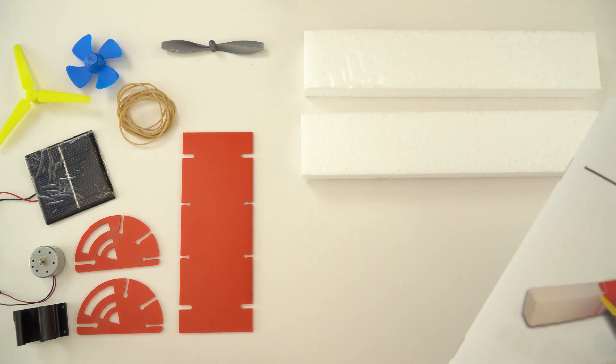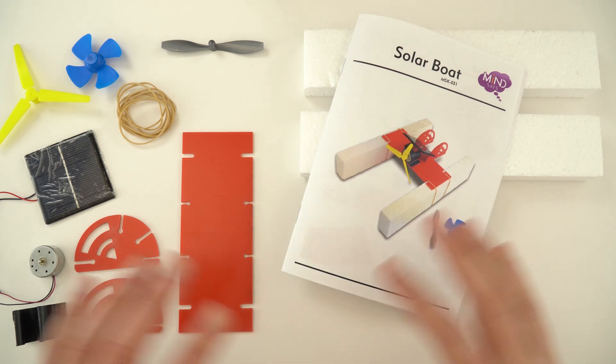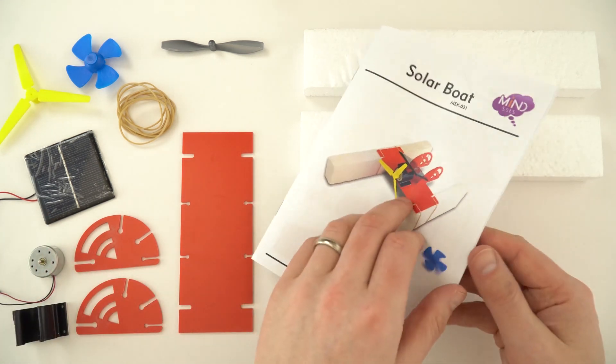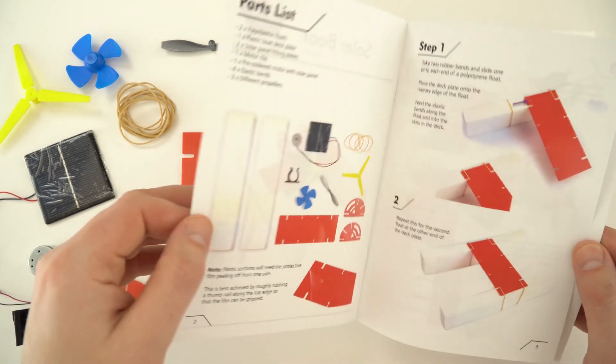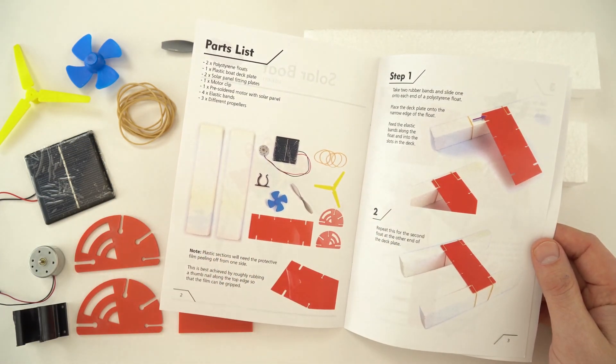In the engineering materials for a greener planet box, there's one of these solar boats from Mindsets. So I'm just going to show you how I'm going to construct it. Now the instructions provided are really good, and this is just what I'm using as I'm going to make my boat for the first time.